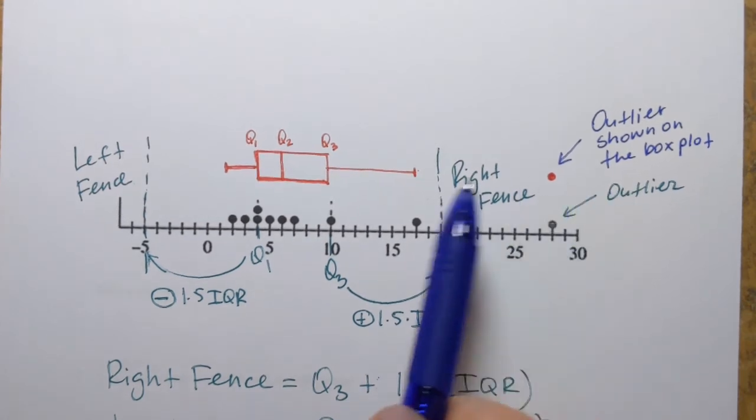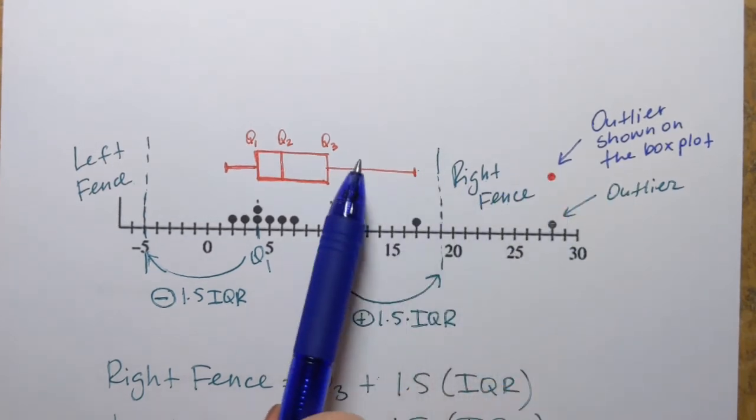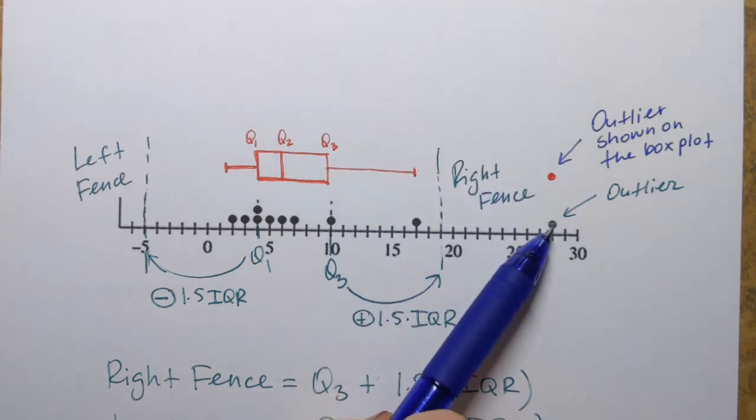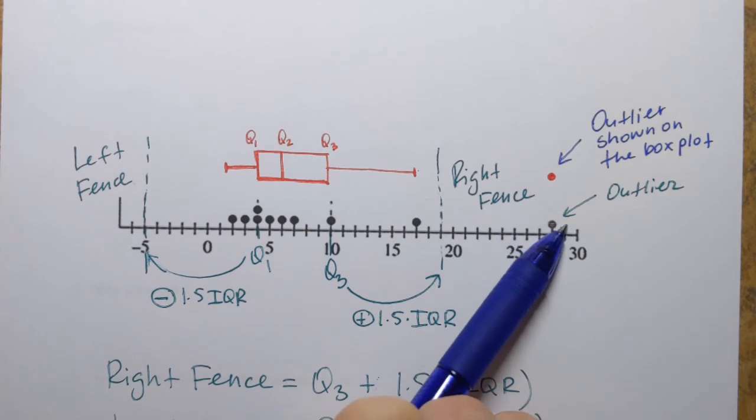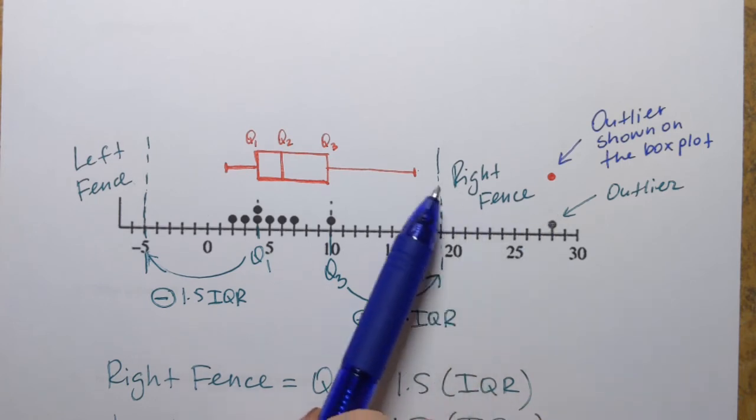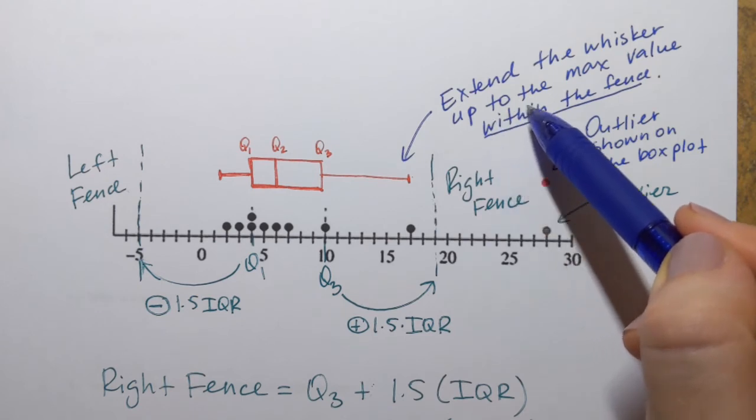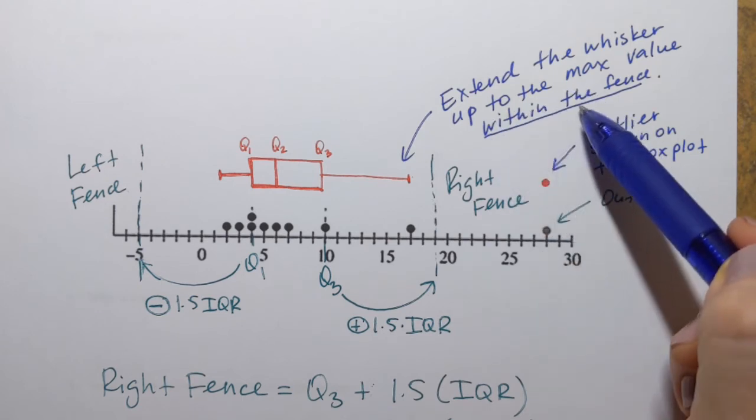And let's make notes about whiskers. So as we already talked about, and notice that this whisker on the right, it's not extended to the maximum value of the data set, because it happens to be an outlier. So we don't include it. We actually extend the whisker to the maximum, or I should say largest value that's not an outlier. So the largest value within the fence. So I wrote extend the whisker up to the maximum value within the fence.